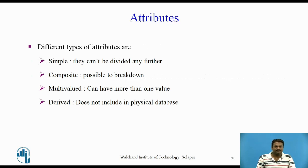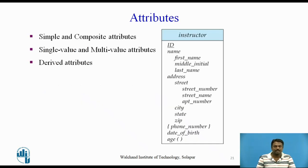Simple attributes cannot be divided any further. Composite attributes are possible to break down into sub-parts. Multivalued attributes can have more than one value. Derived attributes are not stored in the physical database. For example, a composite attribute name with component attributes first name, middle initial, and last name replaces the simple attribute name of instructor. Additionally, an address can be defined as a composite attribute with sub-attributes street, city, state, and zip code — where street is itself composite, consisting of street number, street name, and apartment number. A multivalued attribute phone number is denoted by curly braces, and a derived attribute age is depicted accordingly.